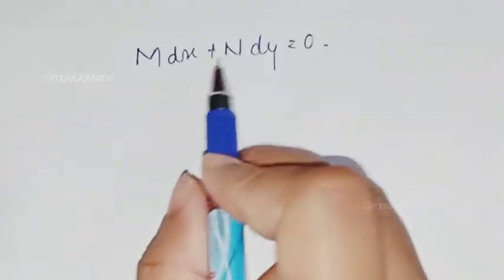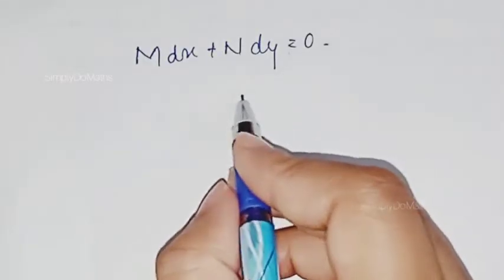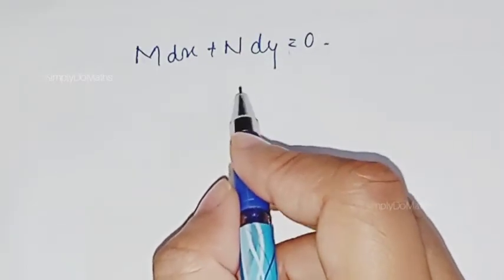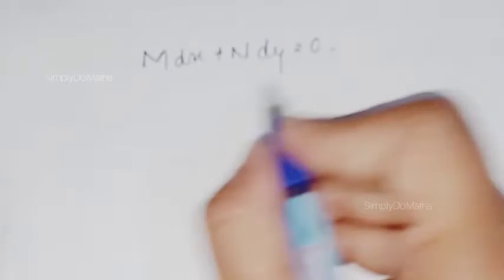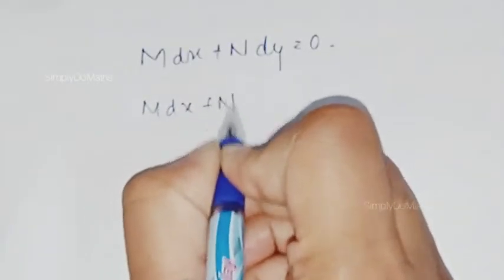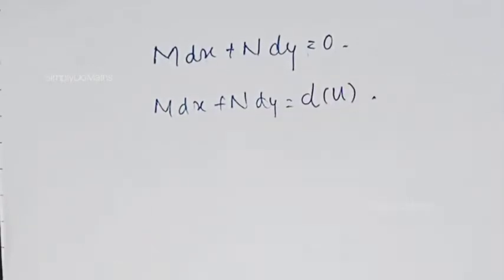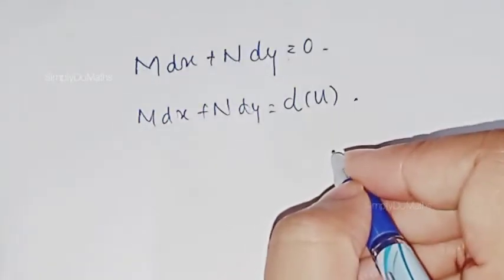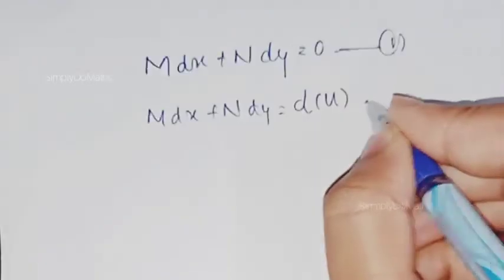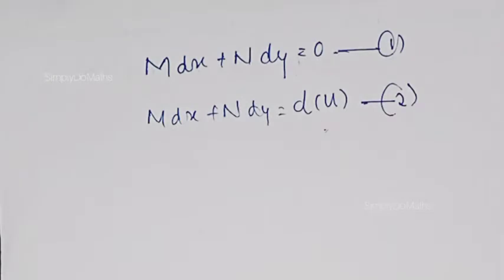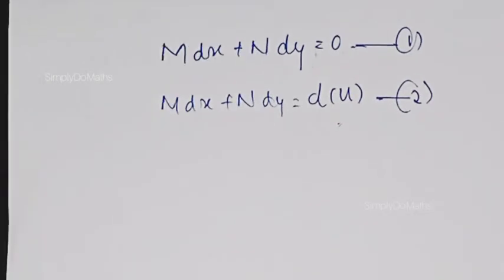The condition for which Mdx + Ndy = 0 is exact is if it is expressible in the form Mdx + Ndy = du, the derivative of u. Call this equation 1 and equation 2, which is by definition. If the given differential equation in the form Mdx + Ndy = 0 can be expressed as the derivative of some function of x and y, then we call that type of differential equation an exact differential equation.